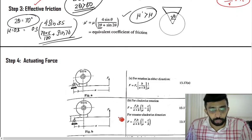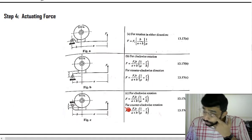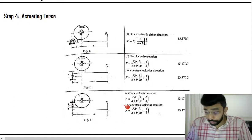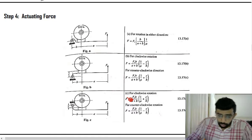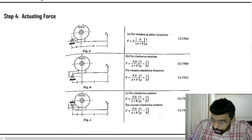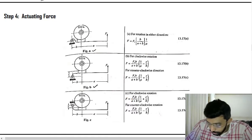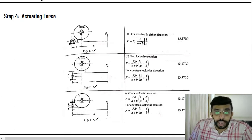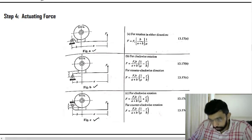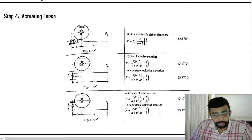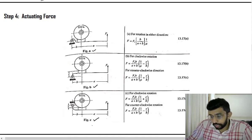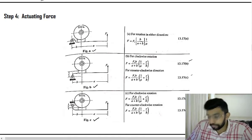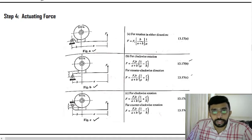Step 4 is the most important part — we are supposed to find out the actuating force. We have three figures: Figure A, Figure B, and Figure C, and we have to sort out the figure that resembles our question, then select the appropriate equation from those two provided.